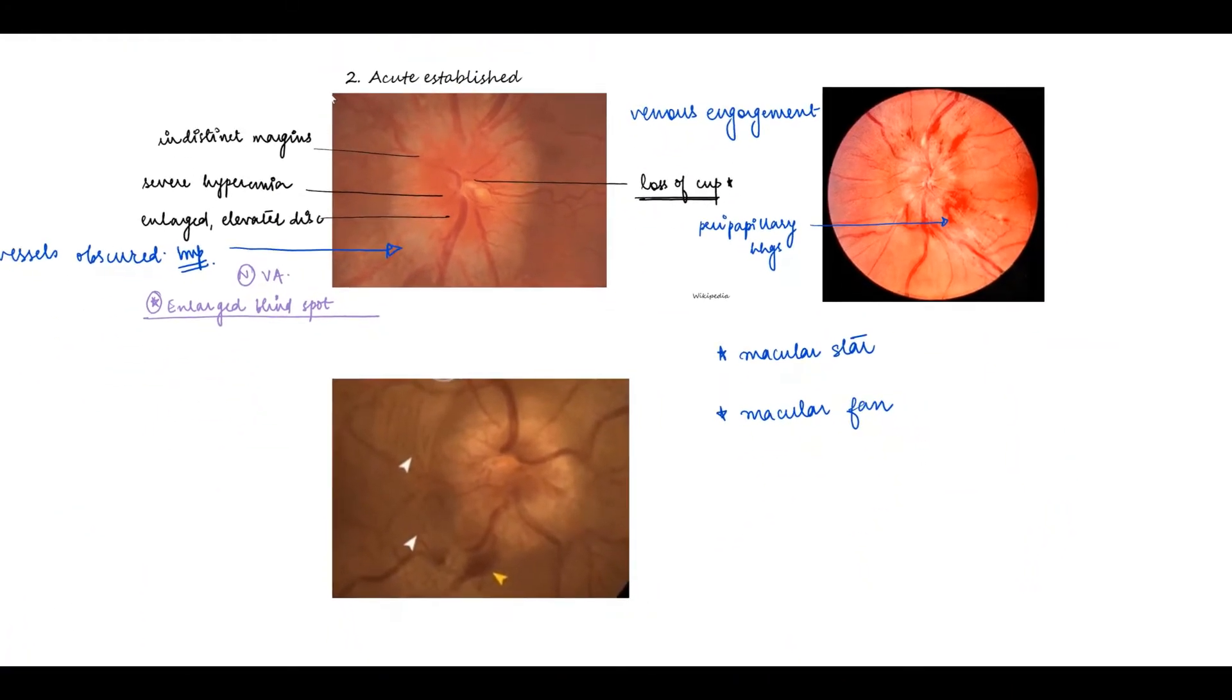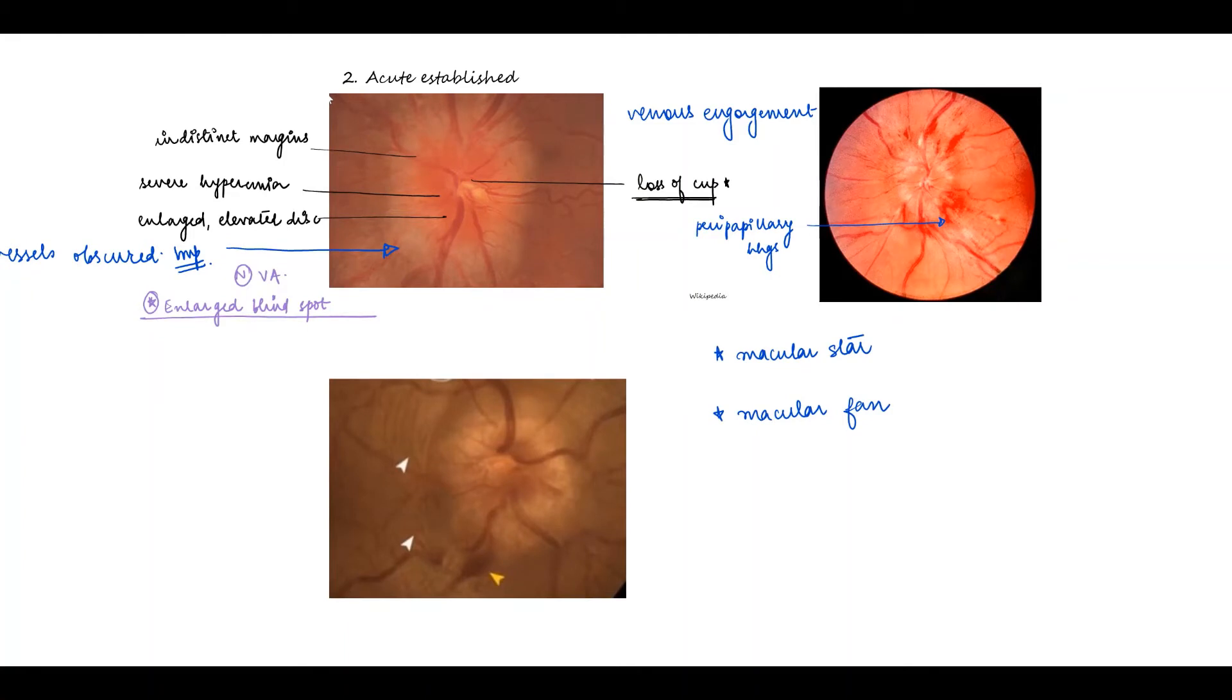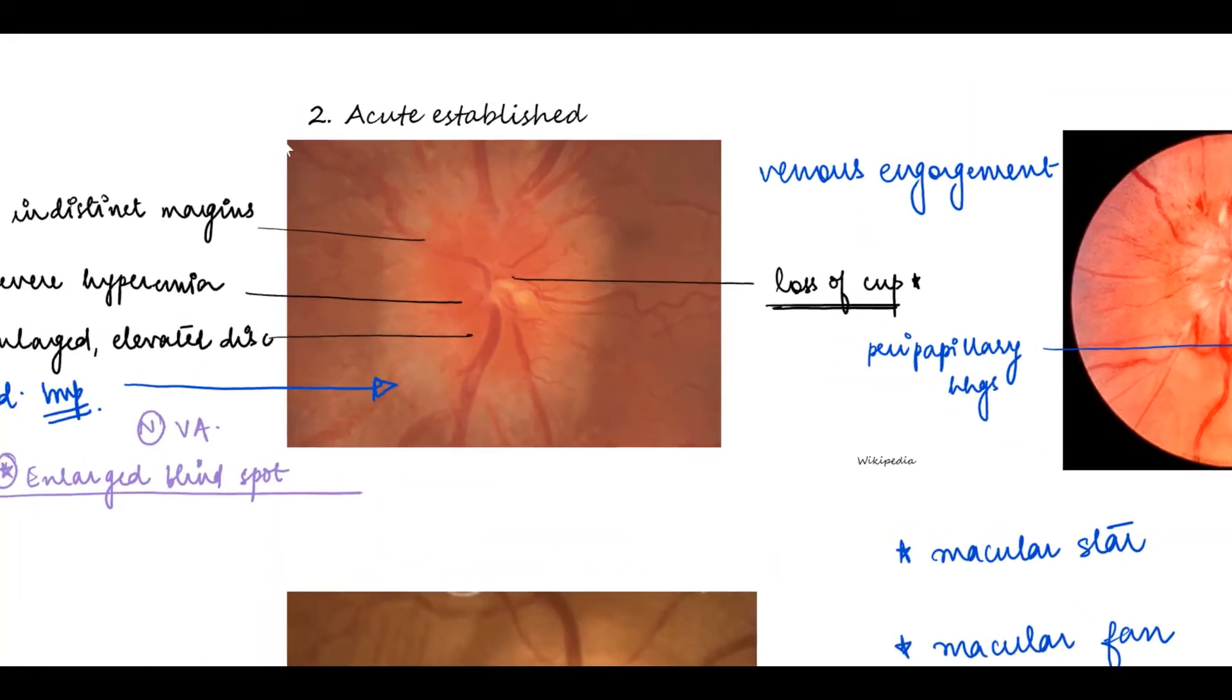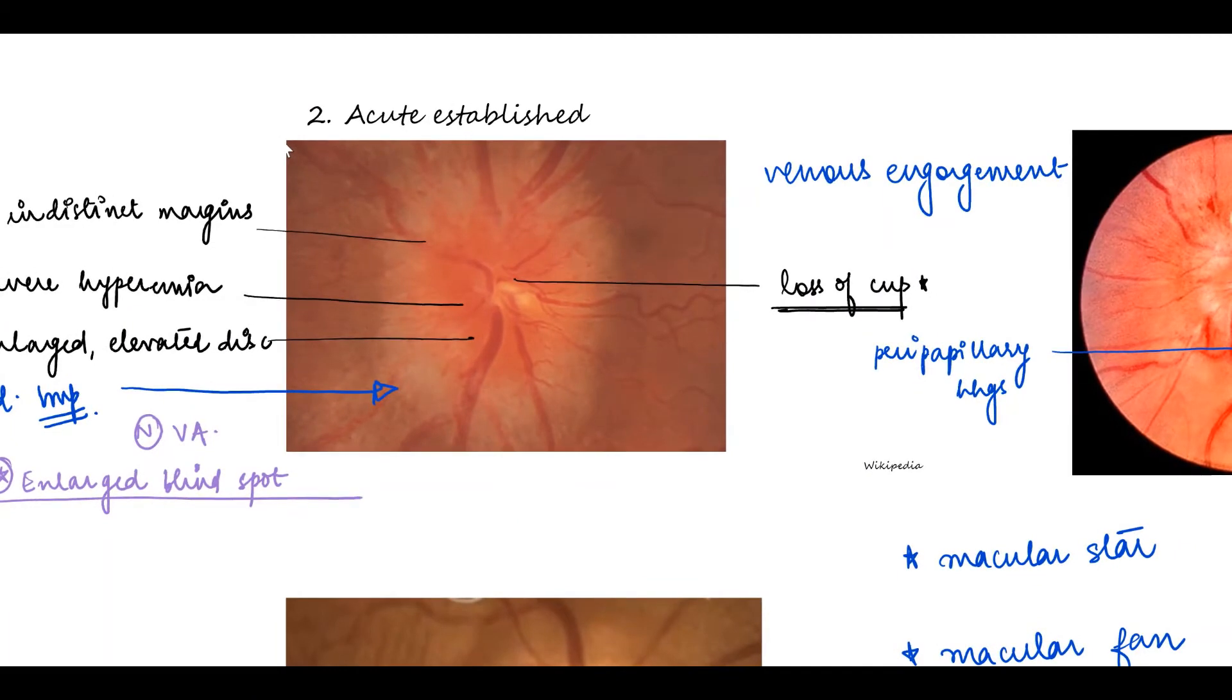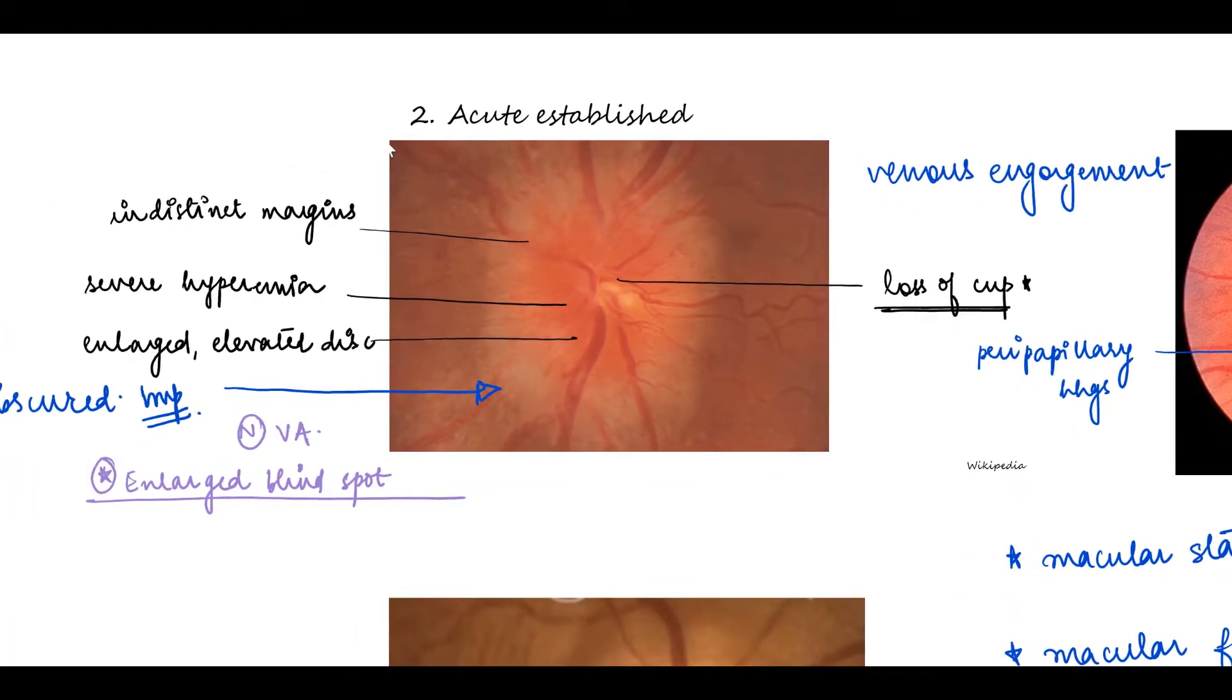Moving on to the acute established papilledema, this is where we can see the characteristic findings. What is striking here is the disc is enlarged, elevated, and has indistinct margins. The hyperemia is severely increased as compared to that seen in the early stage.